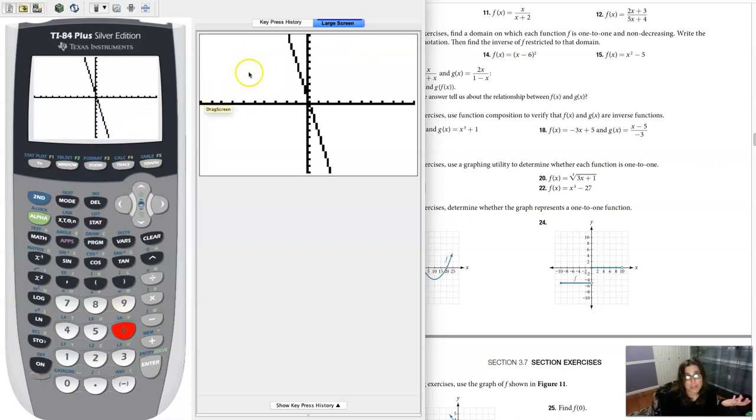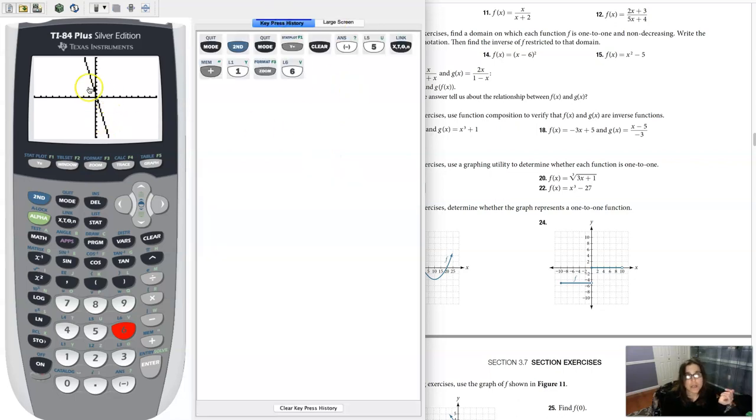that's a line, right? It would pass the horizontal line test if I sent horizontal lines through it. They would only intersect our function once. Oh, we usually have this on keypress history, but even over here, it passes the horizontal line test, so it's a 1 to 1 function, meaning it has an inverse. Alright, thanks so much, bye!